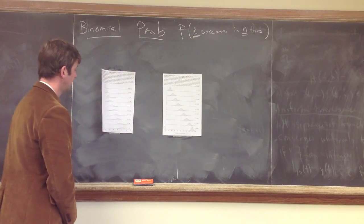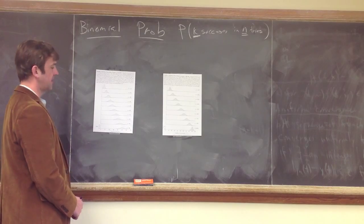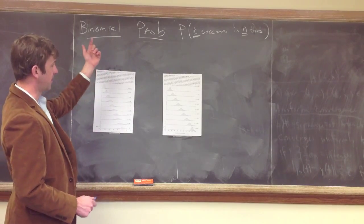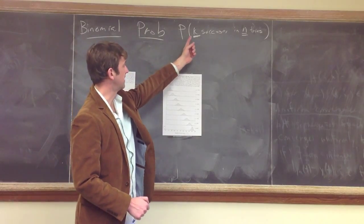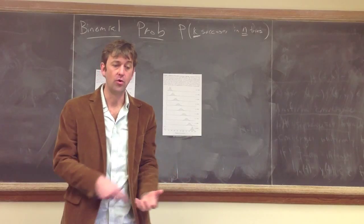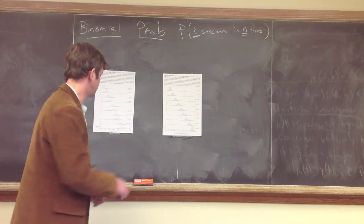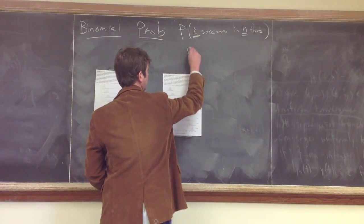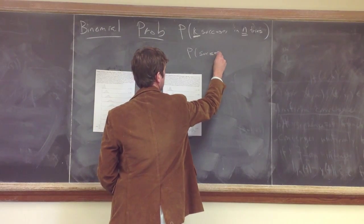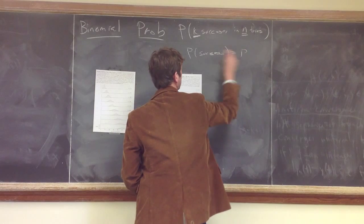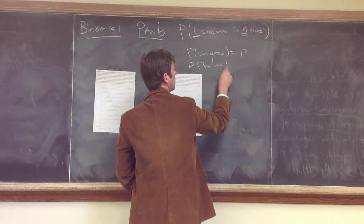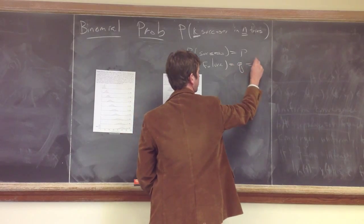All right, so last time we introduced the idea of the binomial distribution, which gives the binomial probabilities — the probability of k successes in n tries of an independent trial, where the probability of success in each try was equal to p, and the probability of failure was equal to q, which is just 1 minus p.